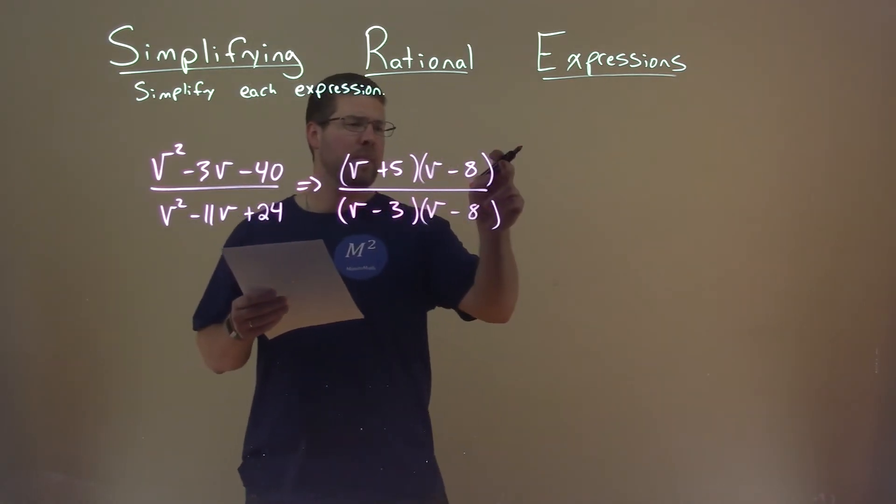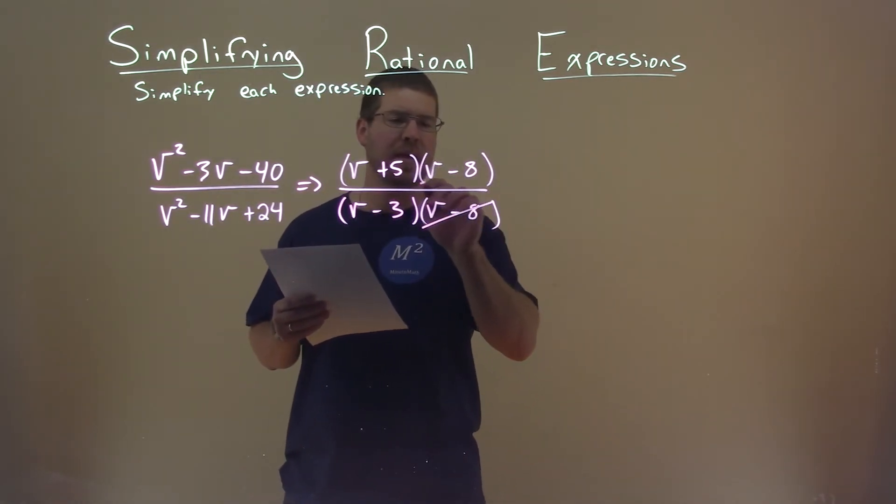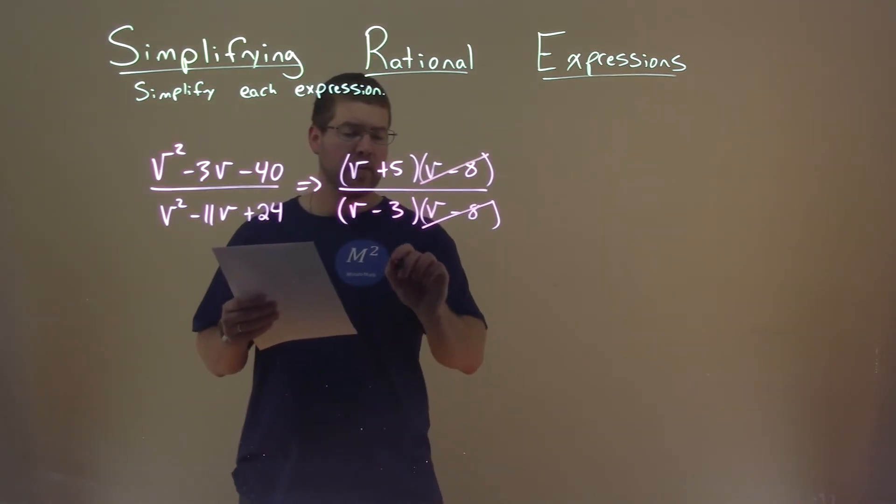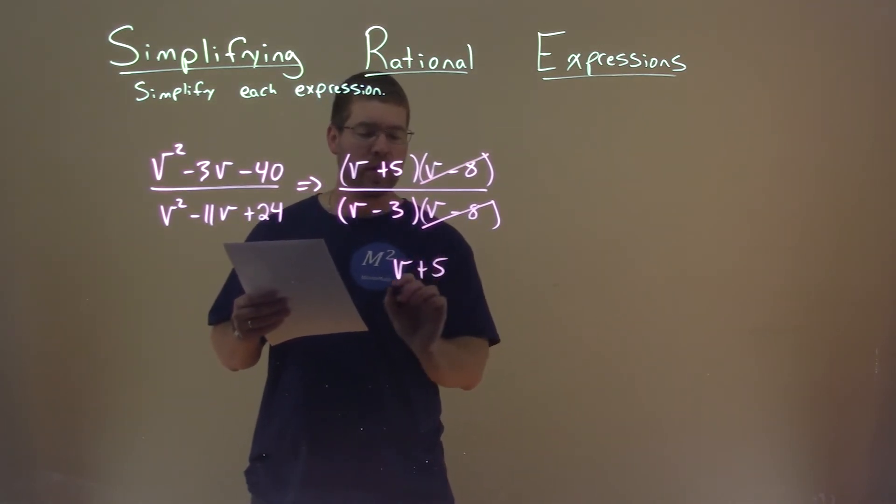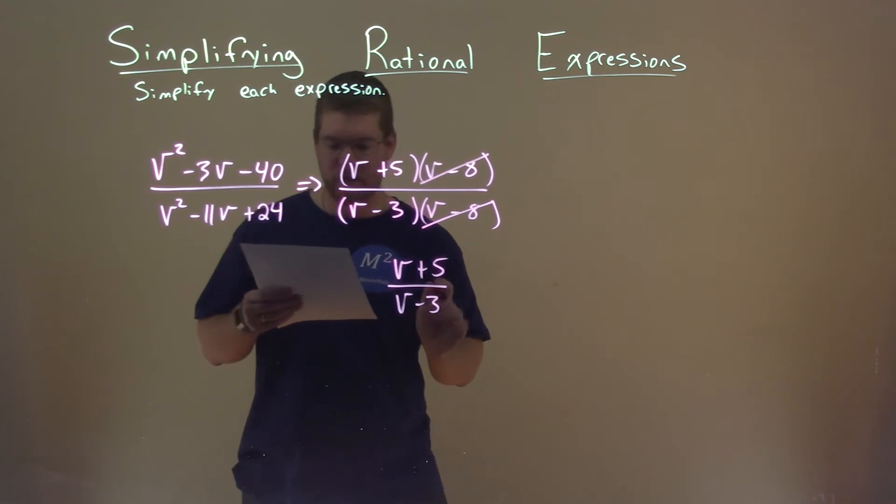Well, now we see a v minus 8 in the numerator and the denominator. They cancel each other out, leaving us with v plus 5 in the numerator and v minus 3 in the denominator, and that is our final answer.